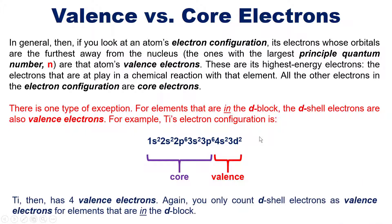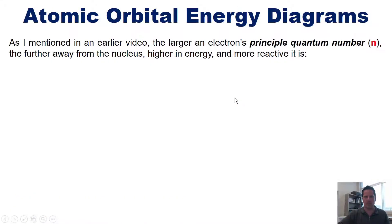Titanium therefore has four valence electrons. Remember, you only count the outermost d shell electrons as valence electrons for d-block elements. For all other elements like bromine, the d electrons count as core electrons and only the outermost s and p electrons are valence electrons. We now move on to atomic orbital energy diagrams.